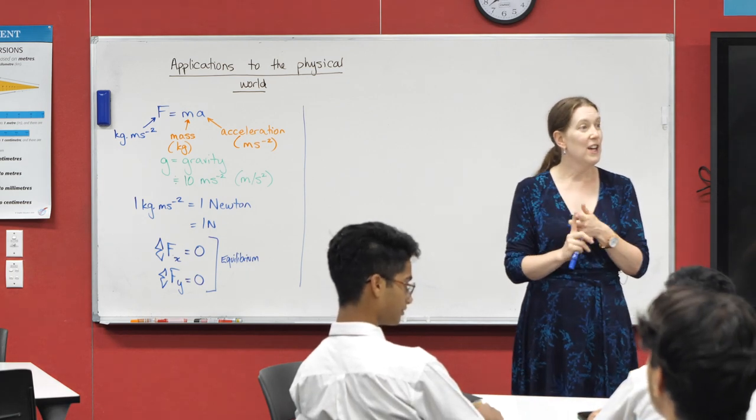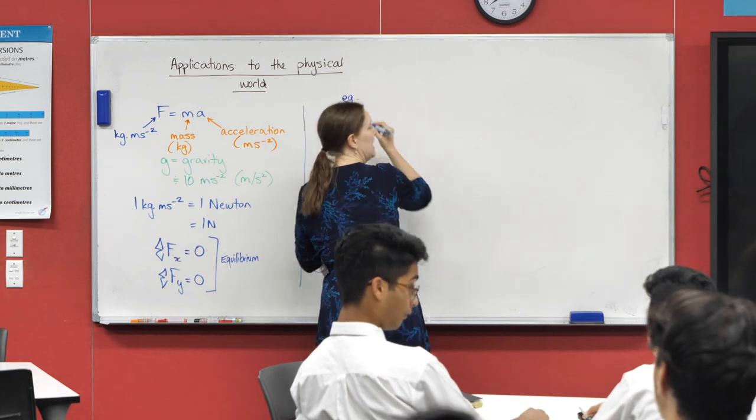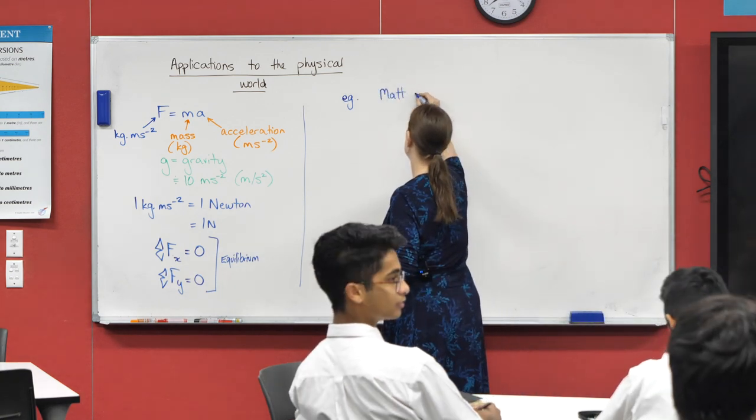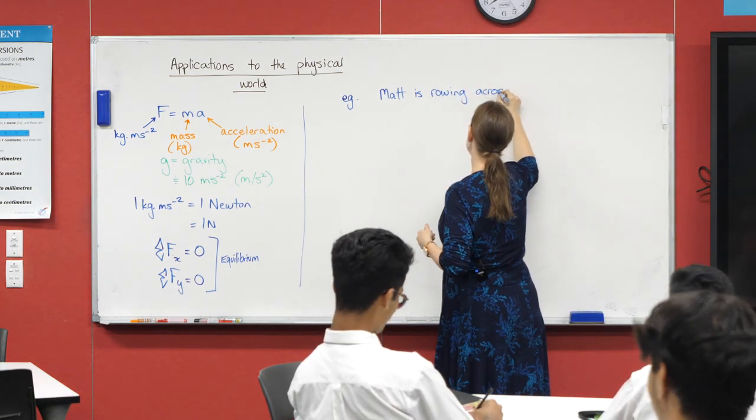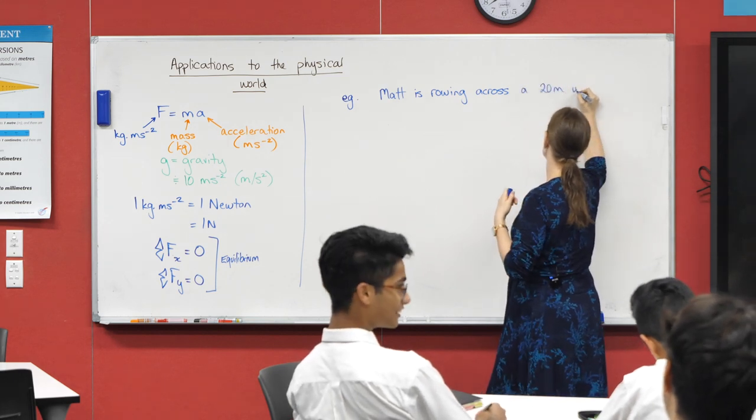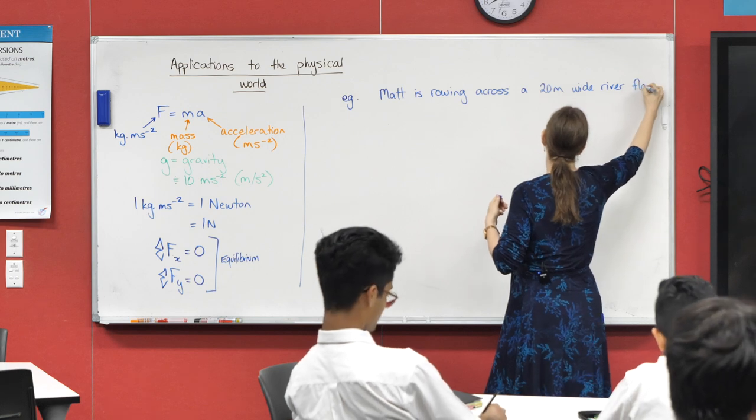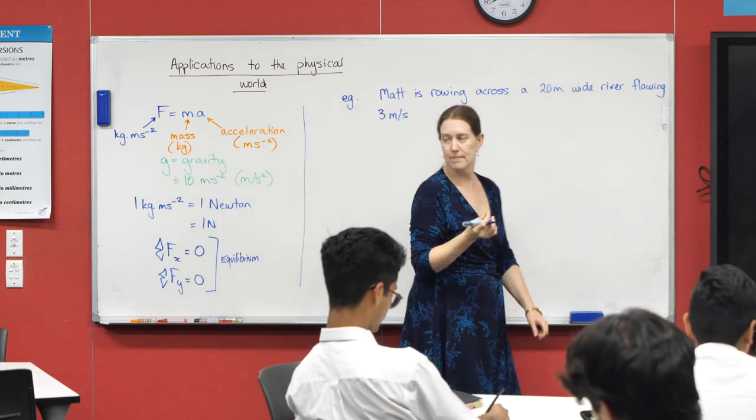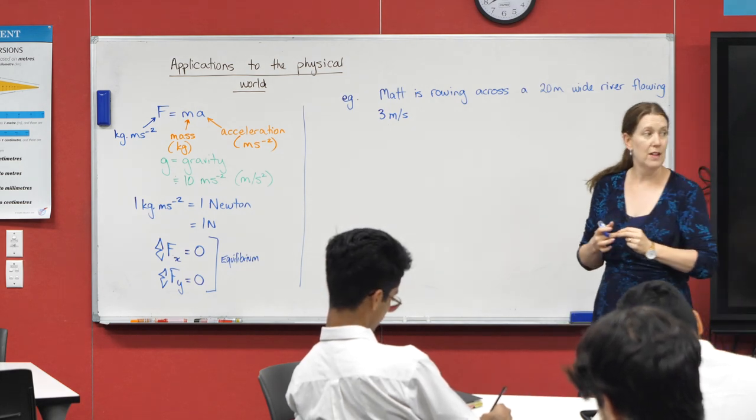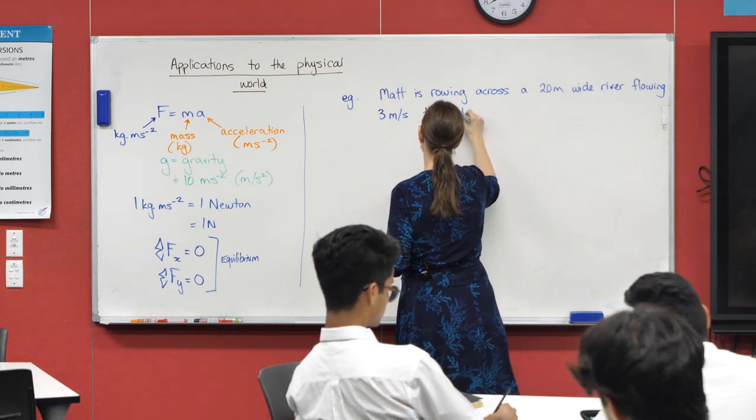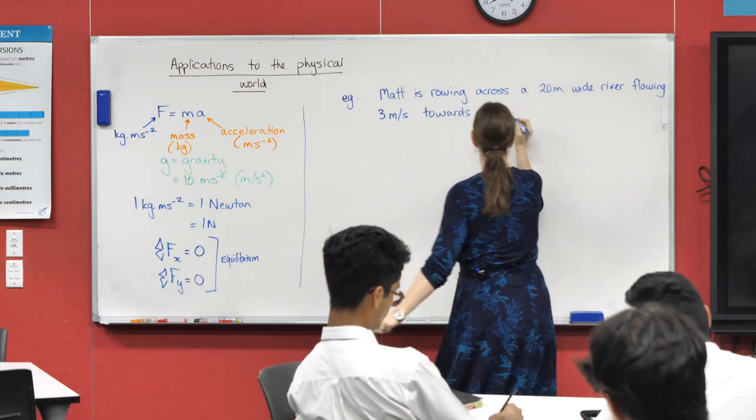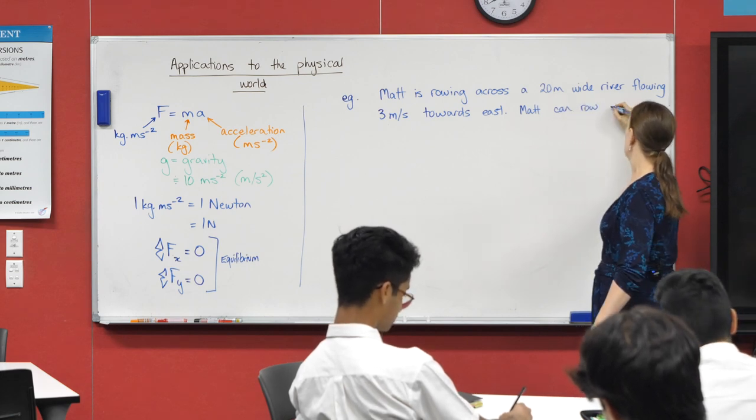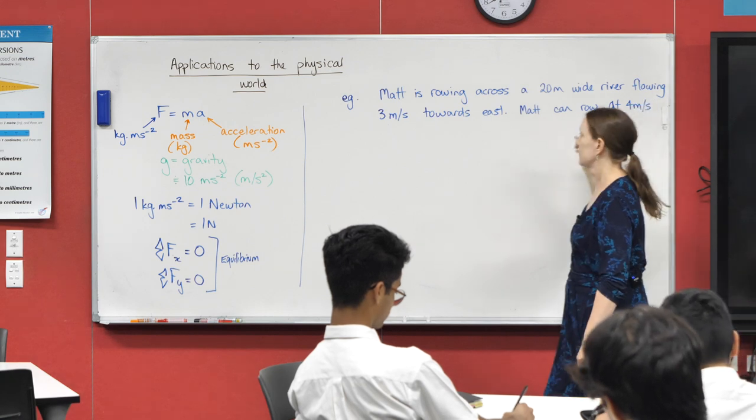All right, so in our first worked example, and these are fairly common in different forms, but in this worked example we have Matt and Matt is rowing a boat across a river. Now the river is 20 meters wide, but rivers don't stay still and this particular river is flowing at three meters per second. And because we're in New South Wales, rivers flow towards the east. Not always. Okay. Matt can row at four meters per second in still water.